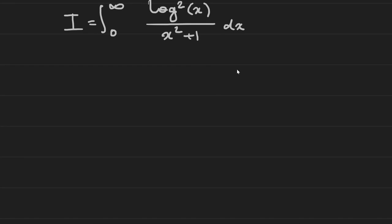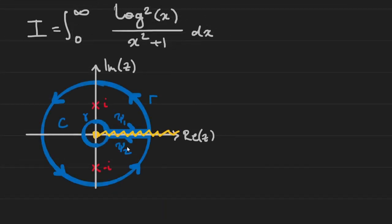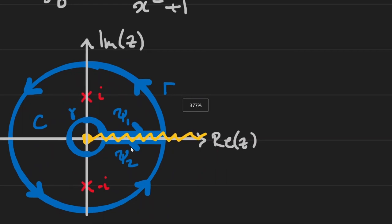So let's draw out a keyhole contour. We have the contour C, which consists of a big part Γ (gamma) that goes around and a little part γ (little gamma). We have a branch cut going out from 0 because of the logarithm term, and then we have poles at plus or minus i because of x squared plus 1. We're trying to wrap everything nicely around this branch cut, so we have these two paths which I call ψ₁ and ψ₂, which kind of go in and then back out.